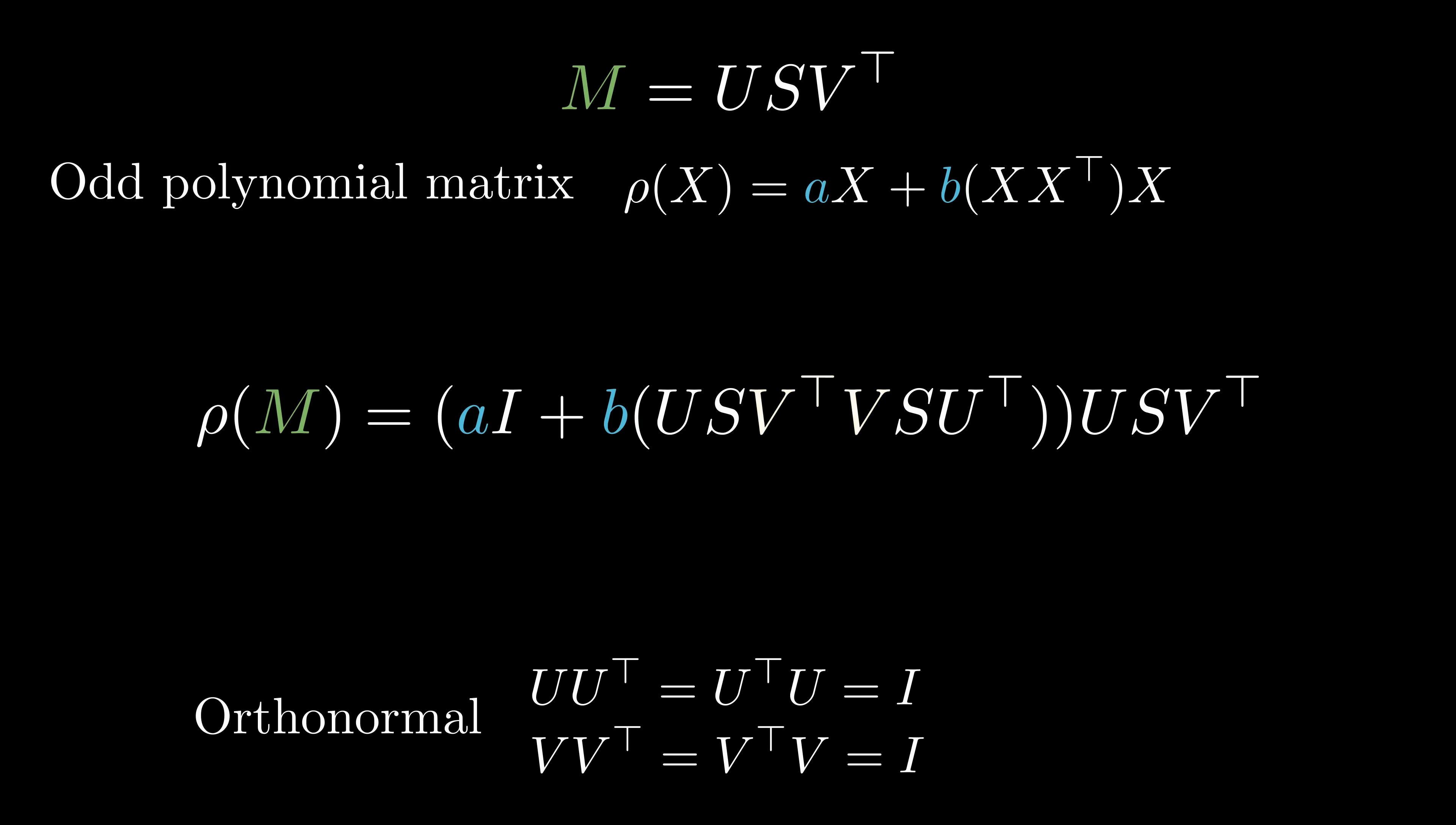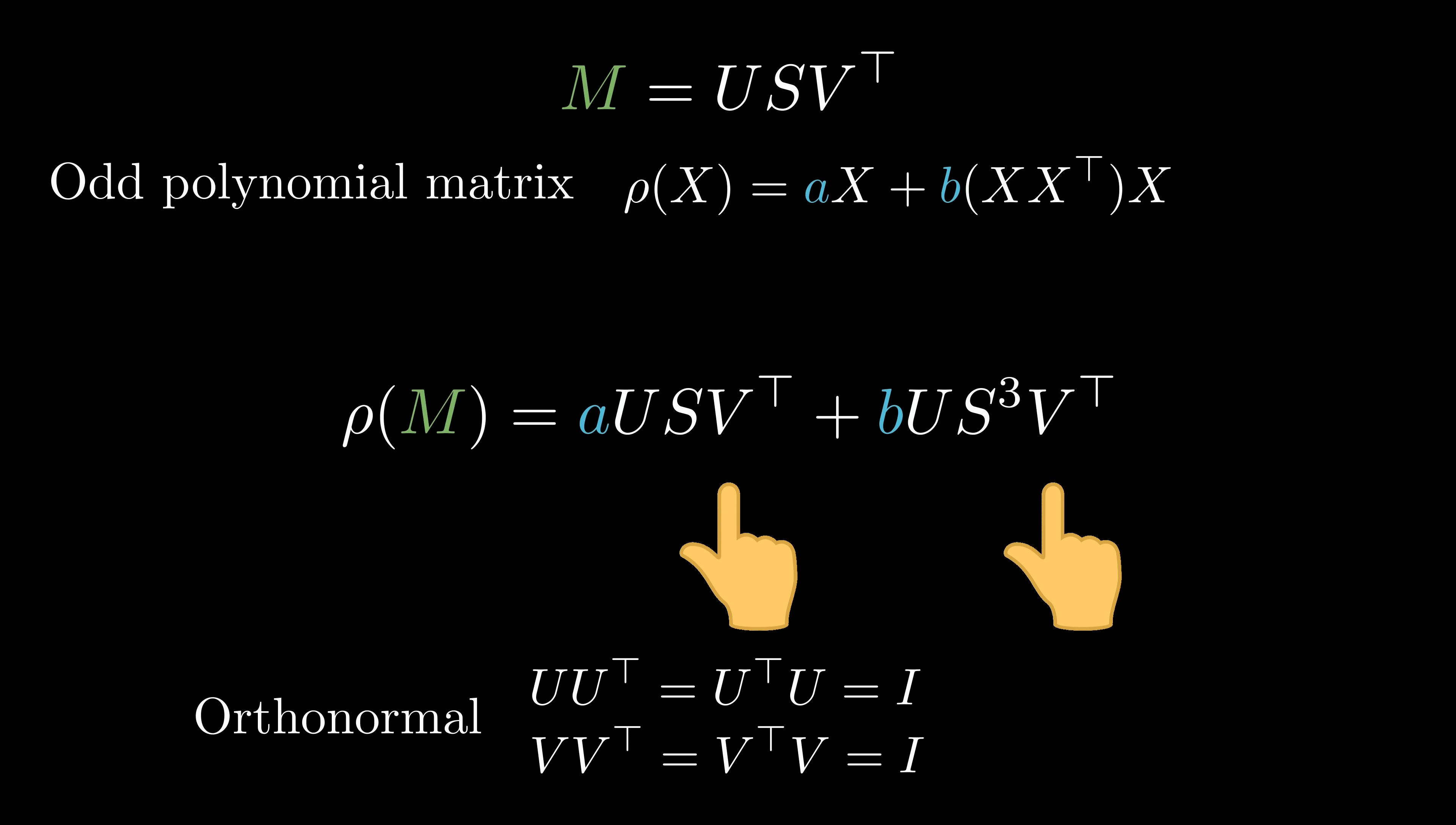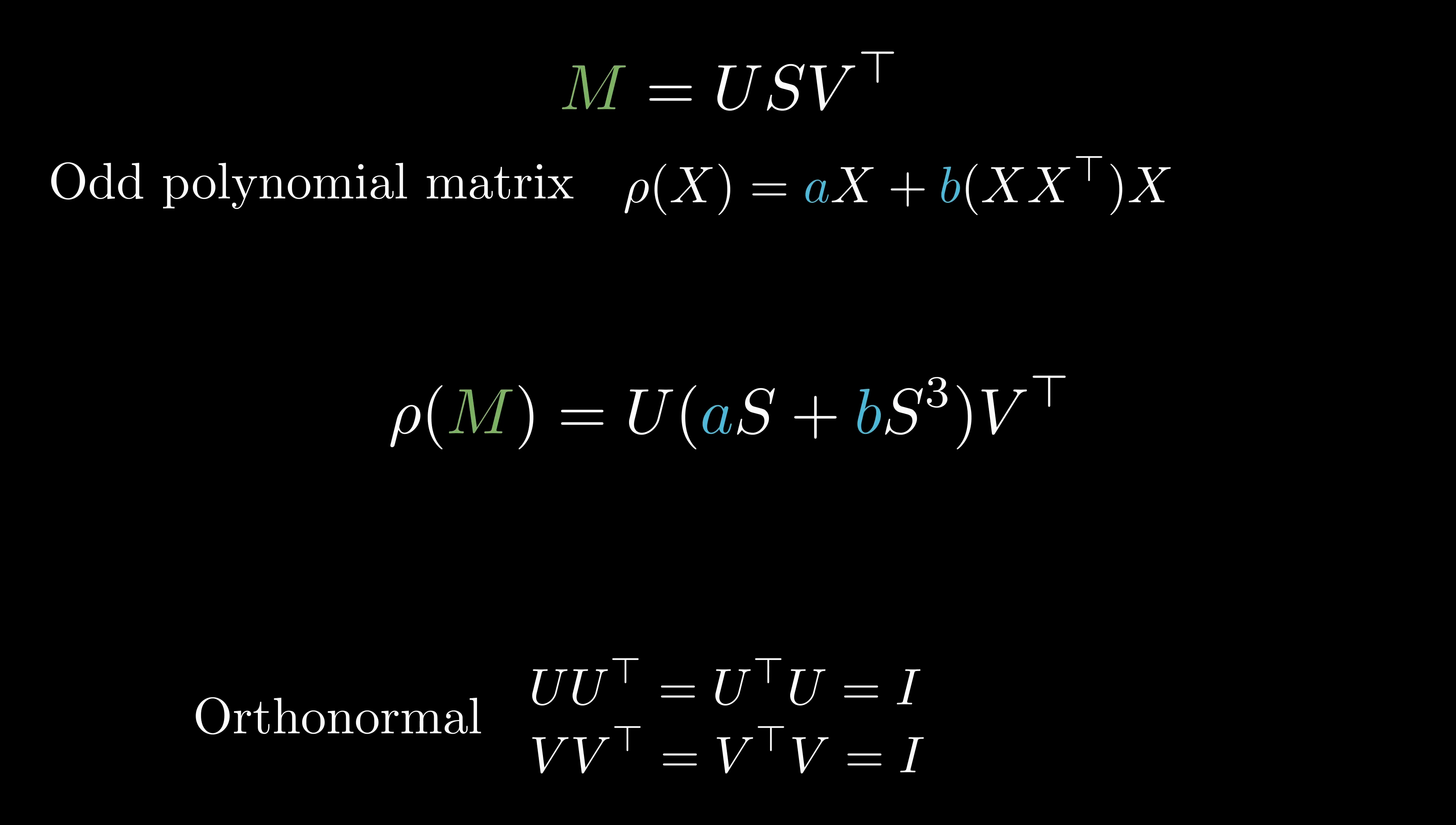Notice that the product between V and V transpose equals the identity matrix, since V is orthonormal. Because S is a diagonal matrix, multiplying it by itself just squares each of its diagonal entries. As we distributed the matrix multiplications, certain terms like U transpose U simplify to the identity, leading to a much cleaner expression. In the end, we see that the left side of the equation has the matrix U, while the right side has the matrix V transpose. As a result, we can combine the terms to further simplify the expression. This says that applying an odd polynomial matrix function to M acts on its singular values in the same way as applying the function to each singular value individually, then reconstructing the matrix with the original singular vectors.